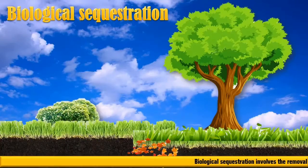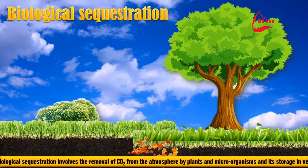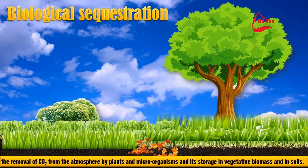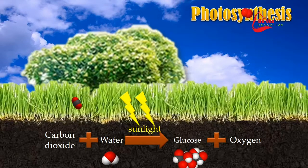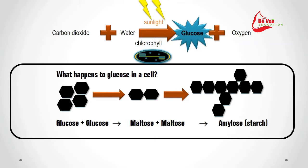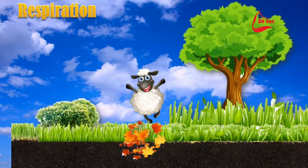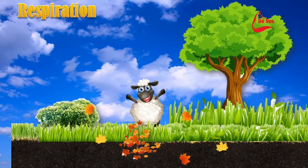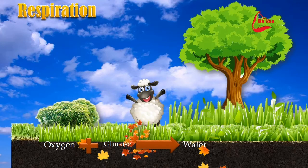Biological sequestration involves the removal of carbon dioxide from the atmosphere by plants and microorganisms and its storage in vegetative biomass and in soils. During photosynthesis, carbon dioxide is taken up by plants and converted into energy-rich organic molecules such as glucose, which contains carbon. Animals eat these plants for food, taking up the organic carbon in the form of carbohydrates. They then break them down during cellular respiration, releasing energy, water, and carbon dioxide.